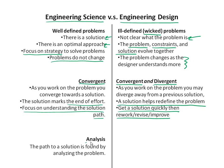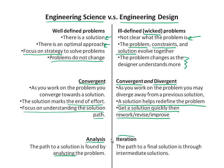The focus in engineering design is not to understand the path to the solution, but often to get a solution very quickly so you can understand the problem space, then rework, revise, improve — or iterate — on that problem. Solve it many times, gaining new understandings each time. In engineering science, the real focus is on analysis: the path to a solution is found by analyzing the problem. In engineering design, the focus is not on analysis as much as it is on iteration. The path to a final solution is through intermediate solutions — you solve the problem over and over, learning more about it each time.